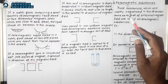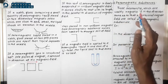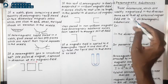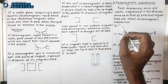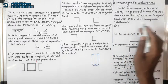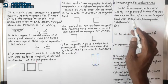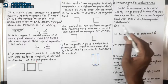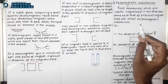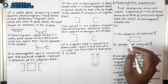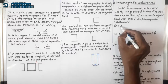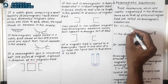Good morning students. In today's lecture we will discuss the second type of magnetic substance, that is paramagnetic substances. Last lecture we discussed diamagnetic substances — their definition, examples, and properties. Similarly, paramagnetic substances are those substances which are weakly magnetized in the direction same as that of the external magnetic field. Examples include aluminum, sodium, antimony.